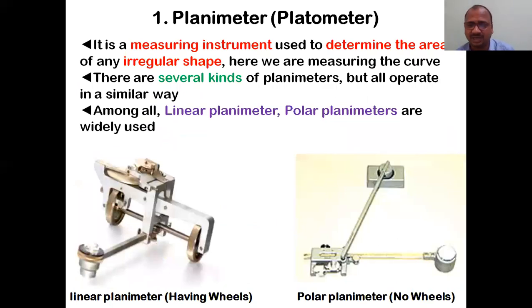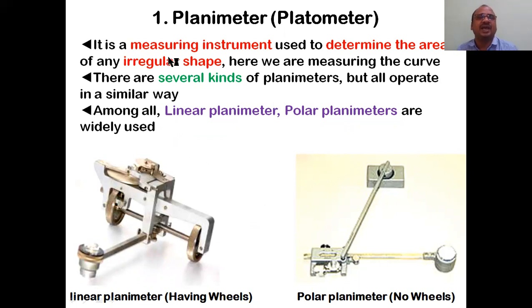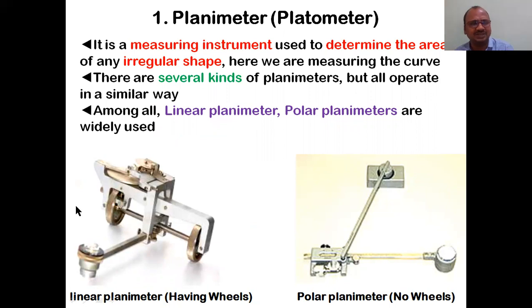The first method is planimeter, also called a plateau meter. It is a measuring instrument. There are two types: a linear planimeter, which has wheels, and a polar planimeter, which has movable joints but not wheels. The linear planimeter looks like this - it has a wheel here and here.